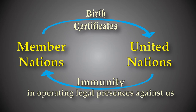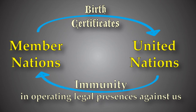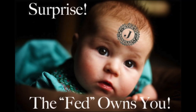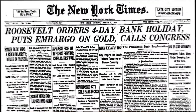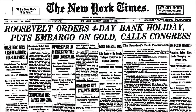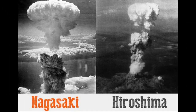The member nation trades birth certificates for immunity in operating U.N. legal presences against the people. Their birth certificates turn humans into chattel legal presences with no constitutional protections. The United States entered the United Nations by first declaring statutory bankruptcy receivership in 1933 and then by being in a legal state of belligerency — that is, in default and breach of the peace.